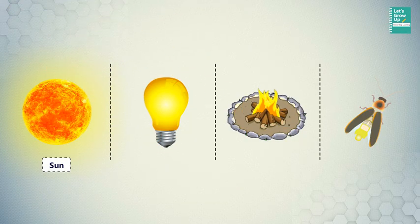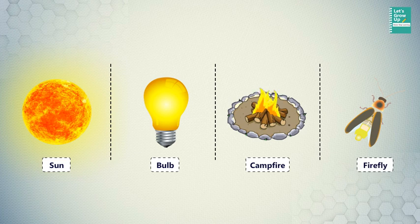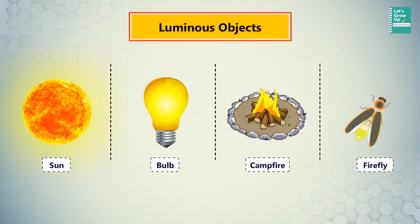For example sun, electric bulbs, campfires, and all of these fireflies are objects that produce light of their own. They are known as luminous objects.